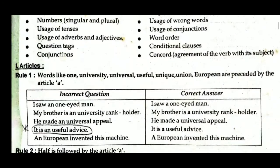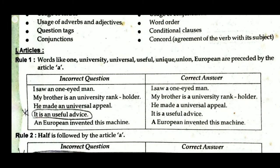We will see Articles. Rule 1: Words like University, Universal, Useful, Unique, Union, European are preceded by the article 'A'. Although these words start with a vowel, they are exceptions. When we pronounce 'One', it gives a W-kind of sound, and 'University' gives a Y-U sound — so we use 'A' instead of 'AN'.